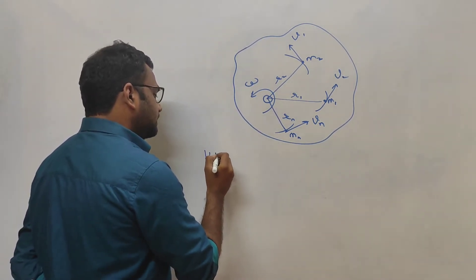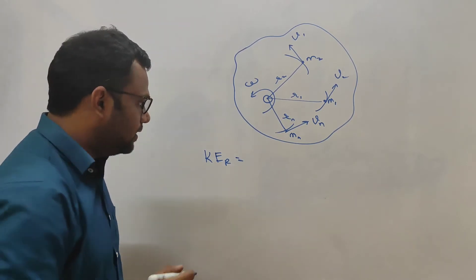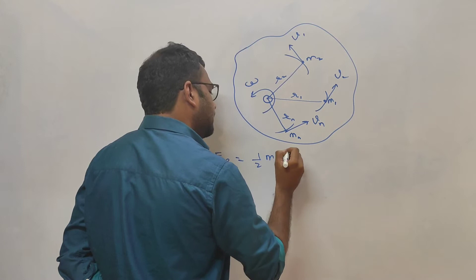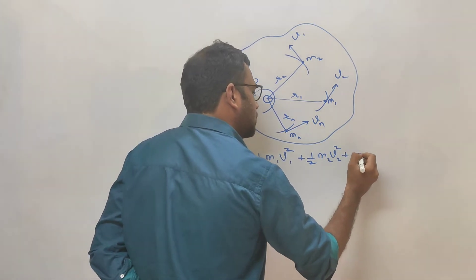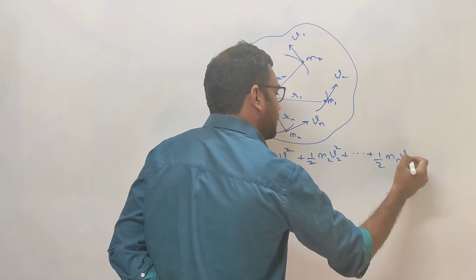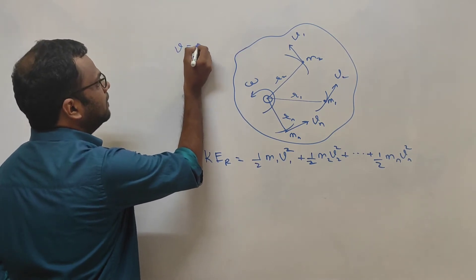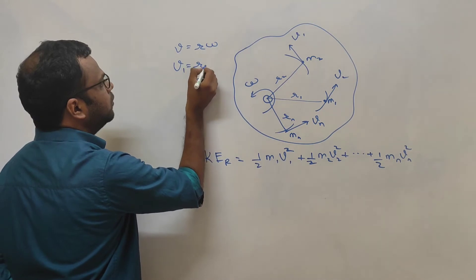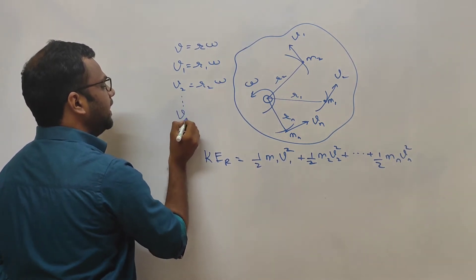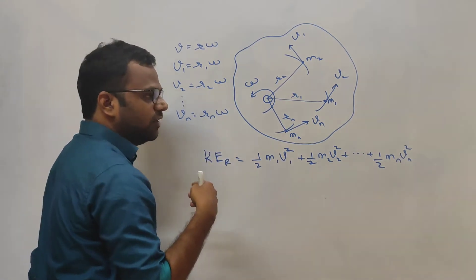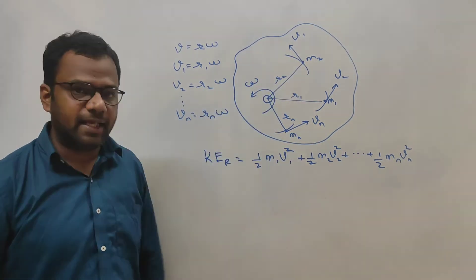The rotational kinetic energy of the entire body is nothing but the summation of the translational kinetic energy of all the particles: ½m1v1² + ½m2v2² + ... + ½mnvn². Now, v is nothing but rω, so v1 = r1ω, v2 = r2ω, and vn = rnω. Each particle rotates with the same angular velocity omega as the entire body, but the linear speeds differ depending on the distance from the axis of rotation.